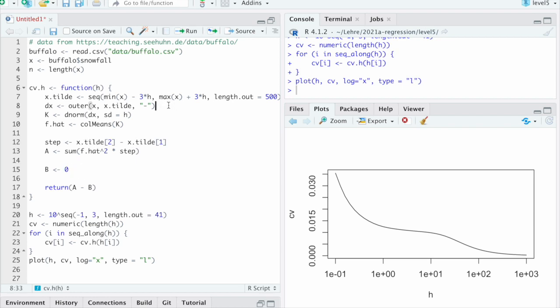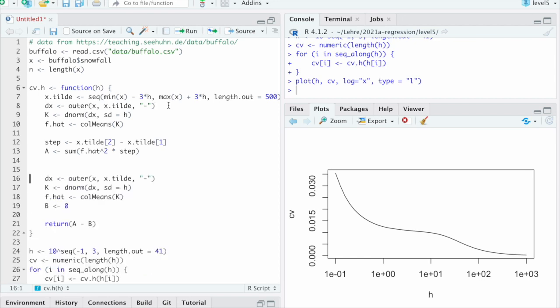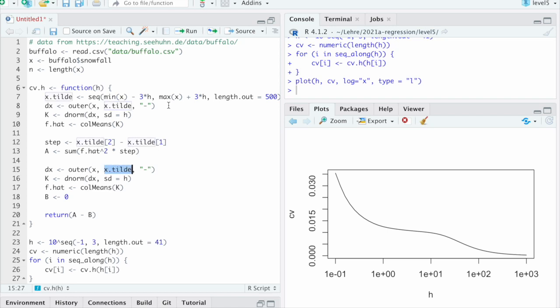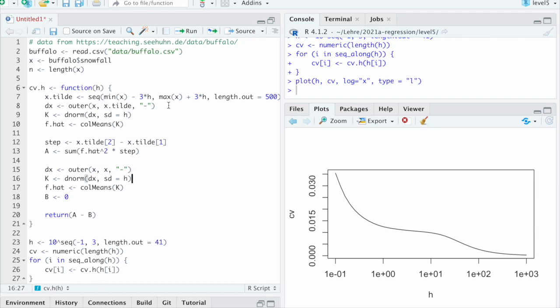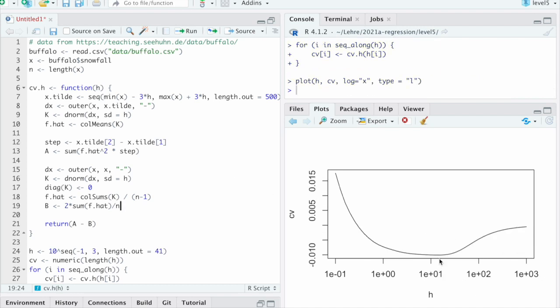Good. Let's plug in the b term. So here we do exactly the same thing. But we do leave one out estimates. And we don't use our grid anymore. So we have to evaluate it at the data points. So we do dx is now pairwise difference between data points. Then we do that. Then I said we set the diagonal of k equal to 0. And then afterwards we cannot use the column means anymore. We do colsums divided by n minus 1. The n minus 1 is why I can't do the means. Let me see how that's built. And then b is sum of f hat. And I think it was times 2 and divided by n. Yes. I just checked. That is right. Let's see what we get now. Now that looks much better. We see b in that cross validation function. Looks like it has a minimum.